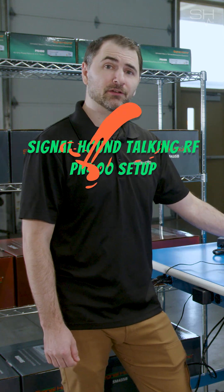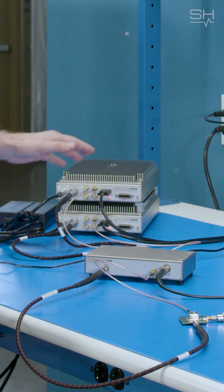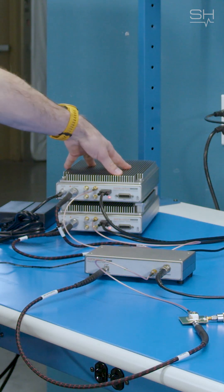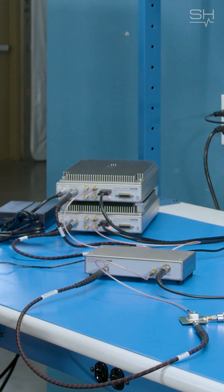So the PN400 is a new product from SignalHound that allows you to connect two SM200 or SM435 devices to make high performance phase noise measurements.